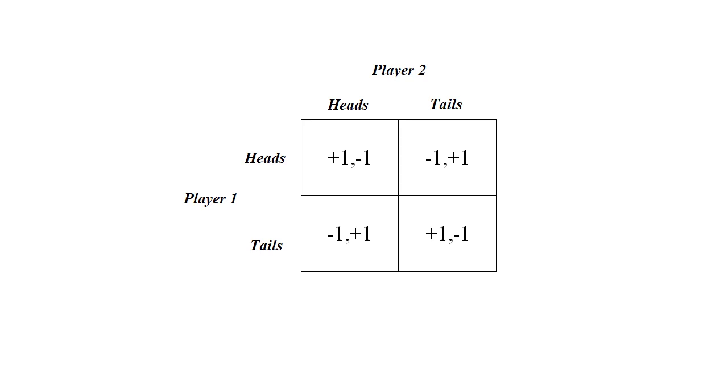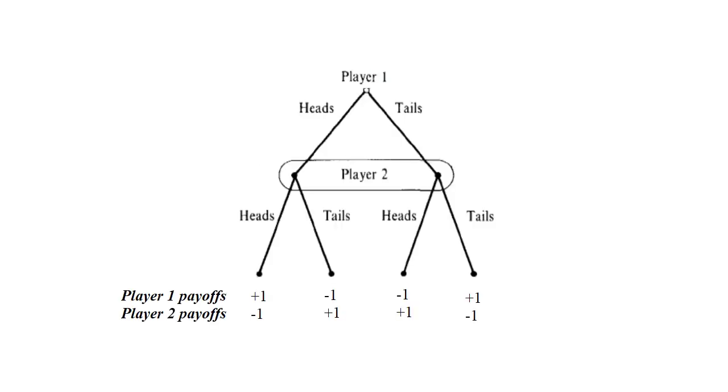Another way to represent matching pennies game is by using a decision tree using branches and nodes. So first we have player 1. Now player 1 has two choices: either he can play heads or tails. Now simultaneously here player 2 can play either heads or tails. So this is a simultaneous node for player 2. This is called the decision tree representation of the game.